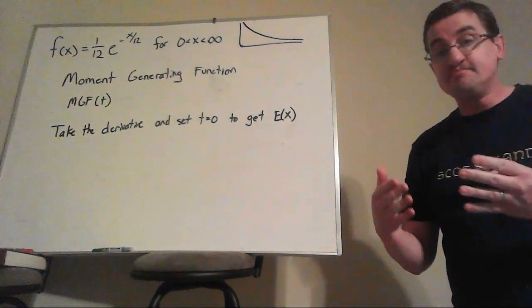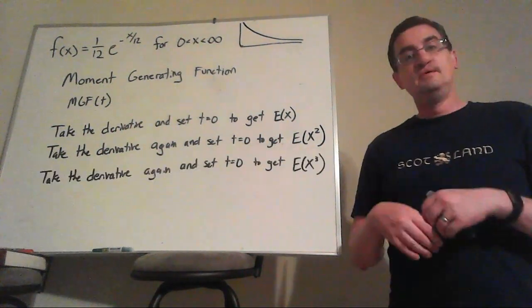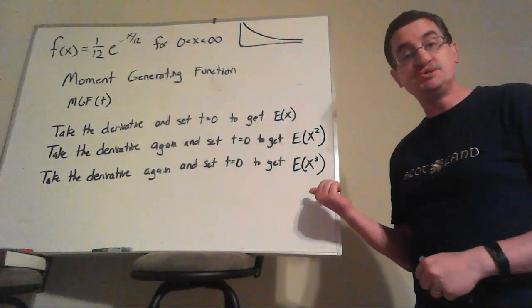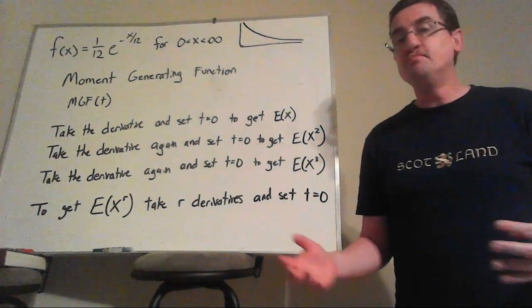If you want the second moment, then you would take two derivatives and then set t equal to zero. The third follows the same pattern, three derivatives, set t equal to zero, there's your expected value of x cubed, and so on, to get as many moments as you want.